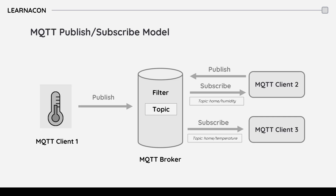MQTT works based on a publish-subscribe model, which is quite different from the traditional client-server model. In this model, every node in the network, which we call MQTT clients, can send or receive data using an action we refer to as publish or subscribe. The main difference compared to the client-server model is that there is no direct communication between sender and receiver — all messages have to go through a central node, which we call the MQTT broker.